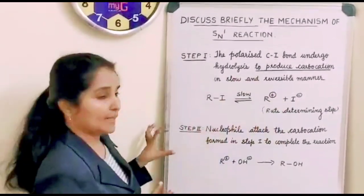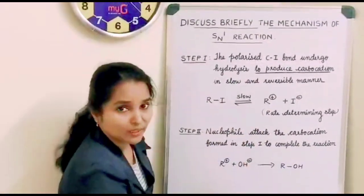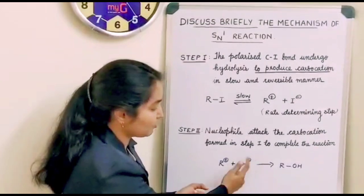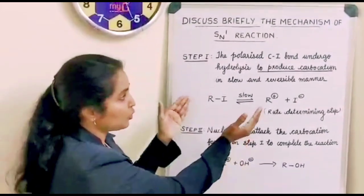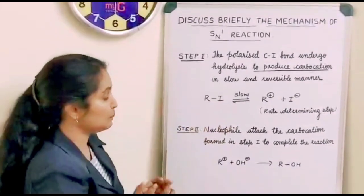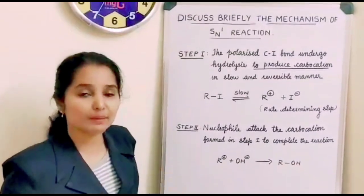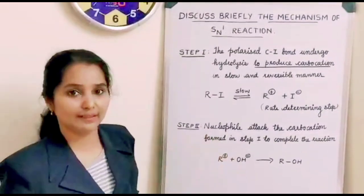So this formed carbocation in the second step is attacked by the nucleophile. You can see here the nucleophile OH-. So the formed carbocation from step 1, from the first step, will be attacked by the nucleophile to form alcohol. This is the mechanism of SN1 reaction.